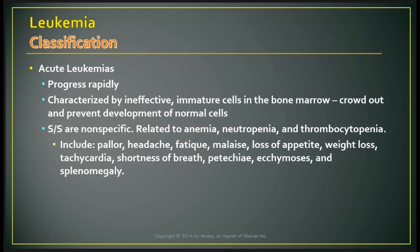Patients bruise very easily and may have splenomegaly. Any minor trauma can cause bruising — even just touching their skin. They may complain of bone pain and tenderness along the long bones, ribs, and sternum as leukemic cells expand into the intramedullary space or invade the periosteum.